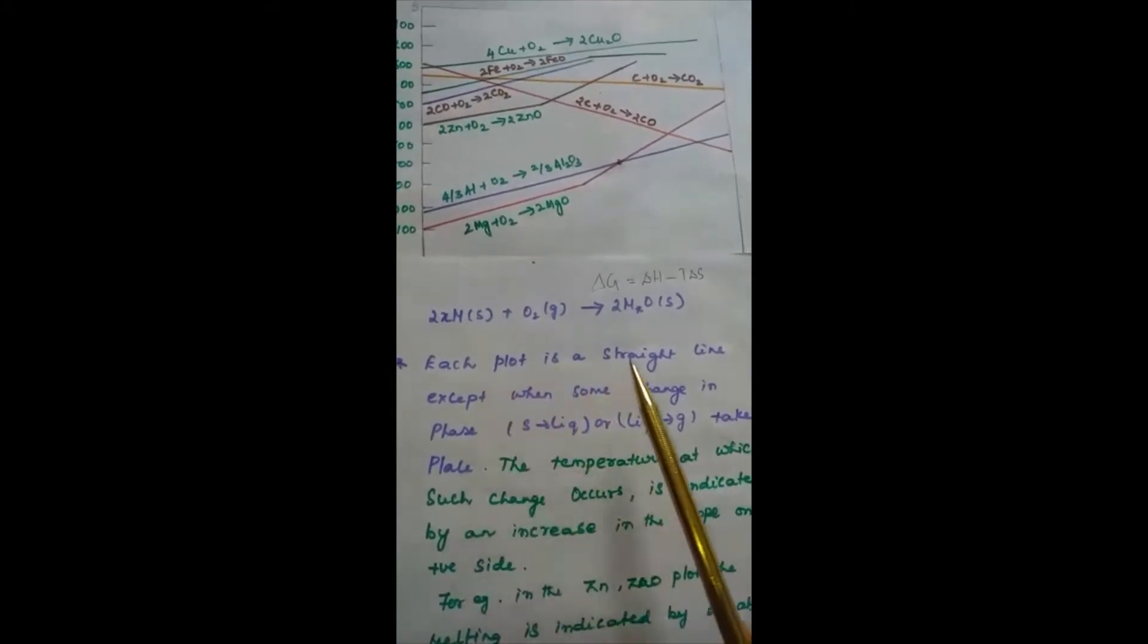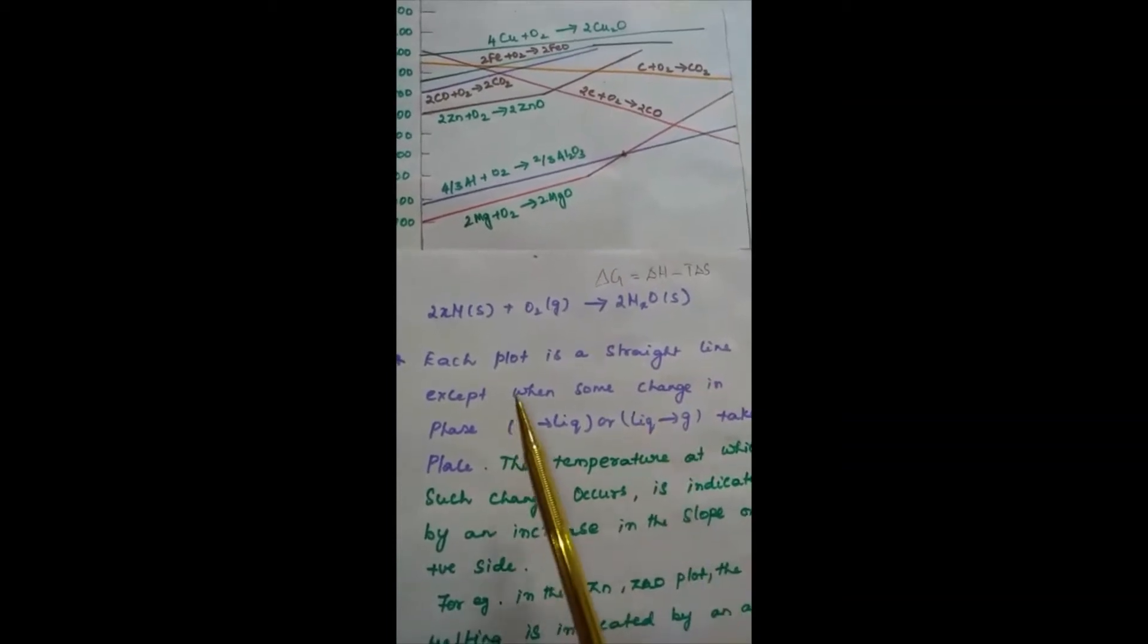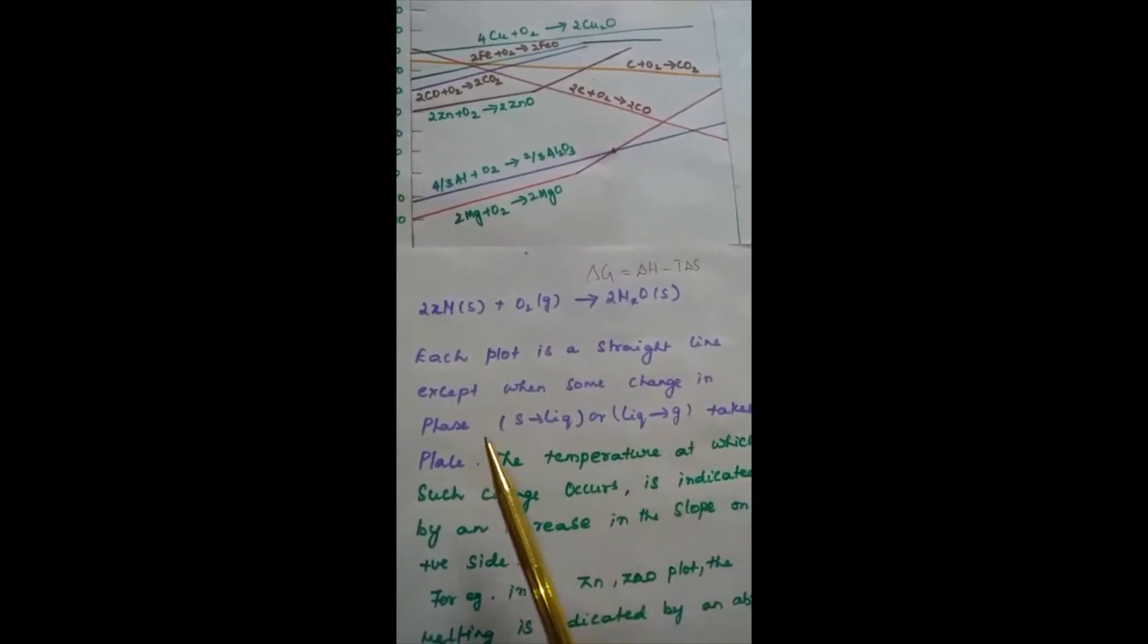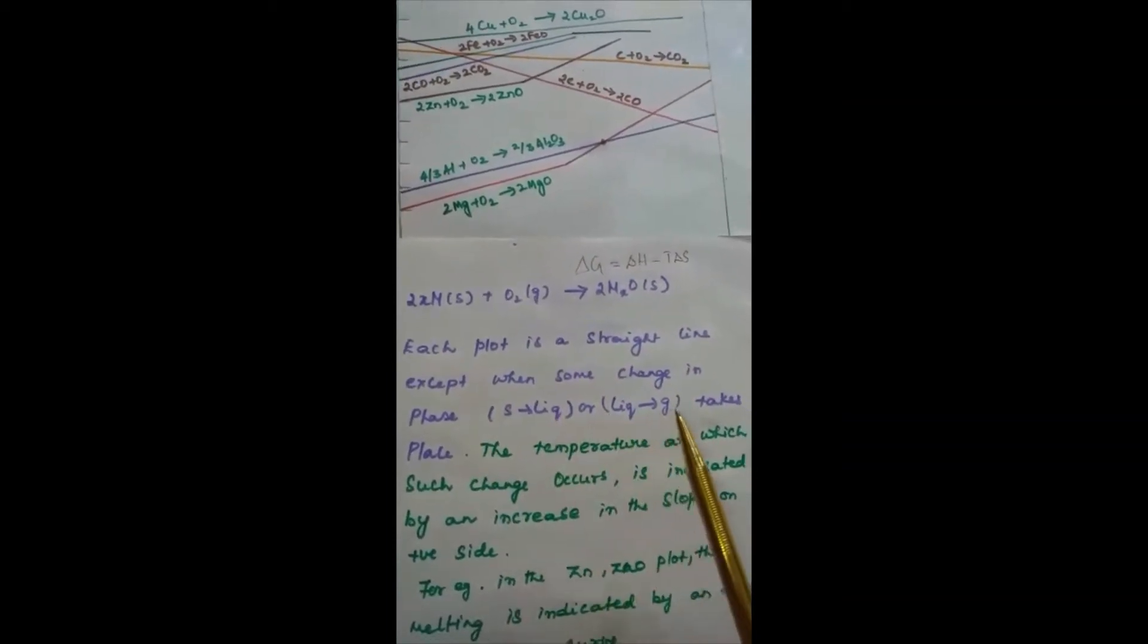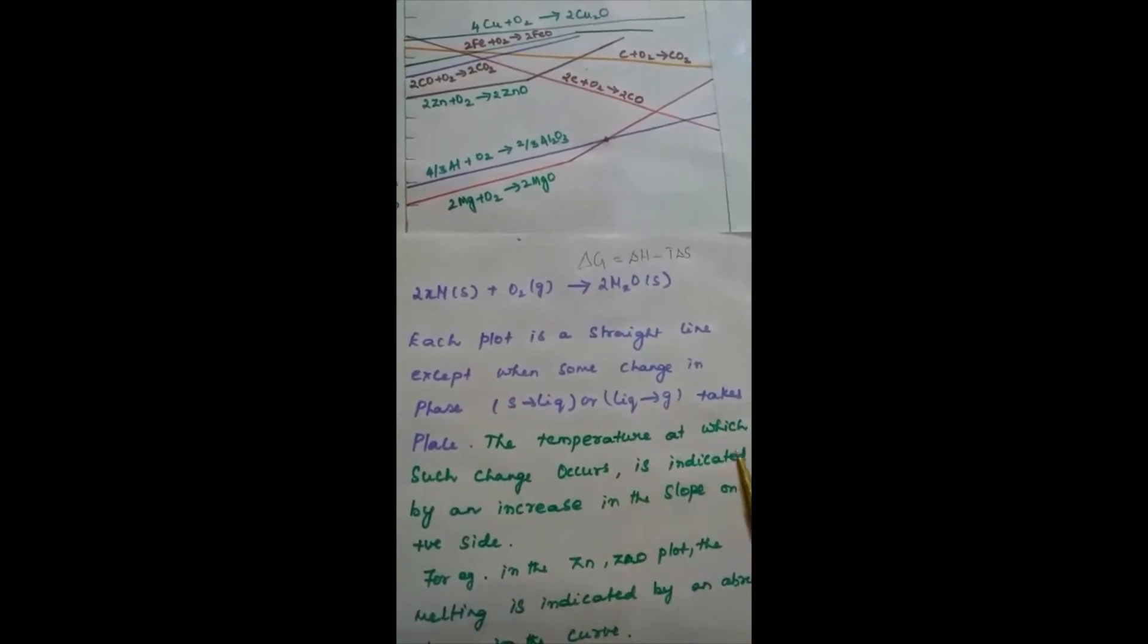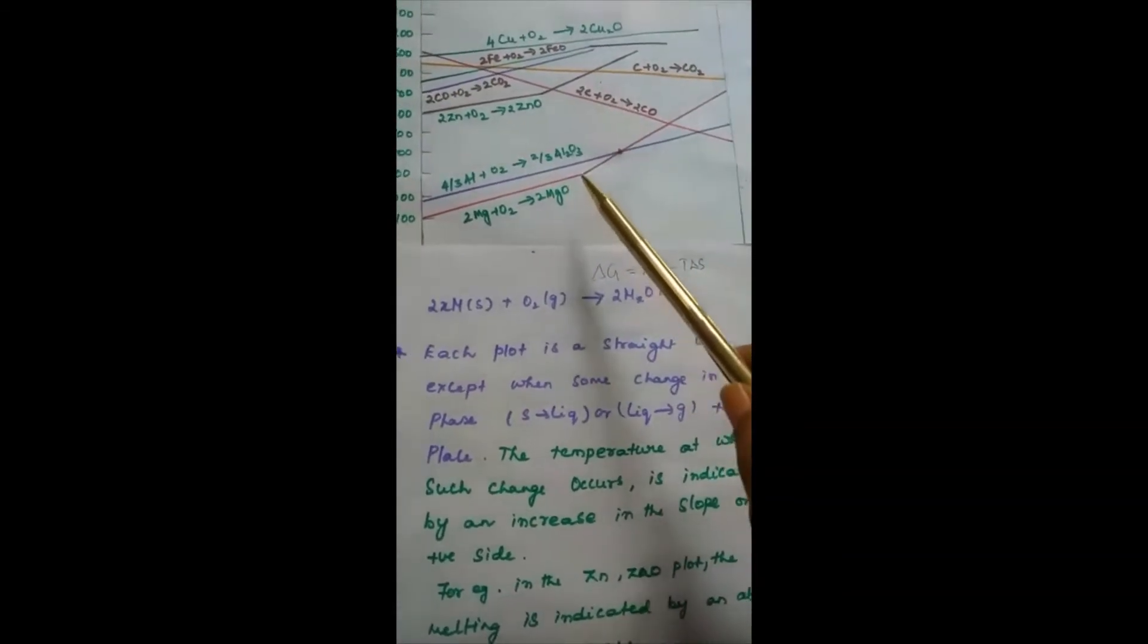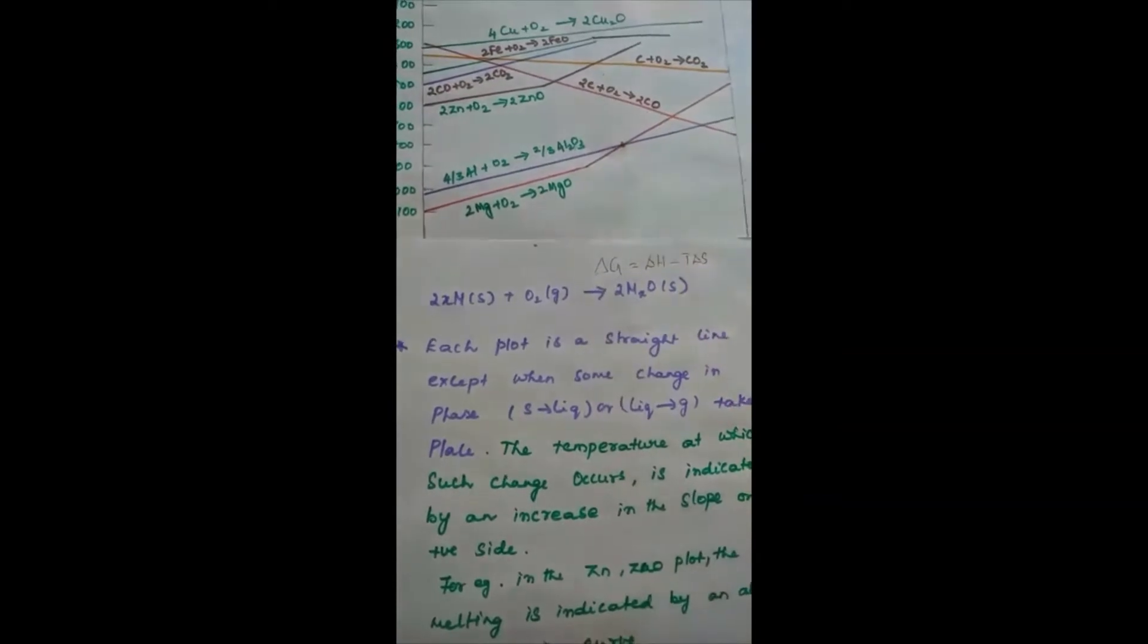Here, each plot is a straight line except when some change in phase, that is solid to liquid or liquid to gas takes place. The temperature at which such change occurs is indicated by an increase in the slope on the positive side. Here, the phase change occurs.